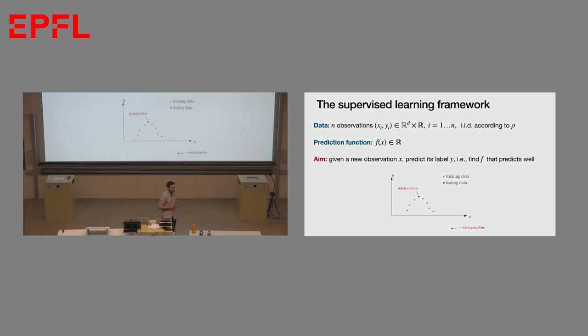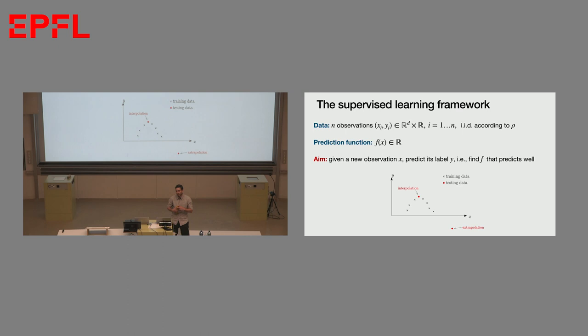The framework of supervised learning is exactly what I just explained. You have n observations x_i, y_i coming from some distribution that you don't know. You consider some prediction function f from the space of observations to your predictions. The goal is: using all your observations, when I give you a new x, you want to predict its label — you want to learn a function f which will predict well.